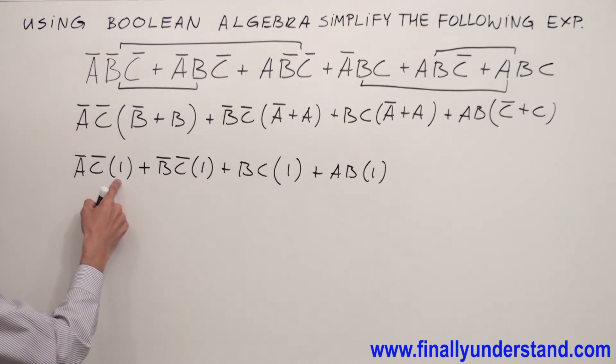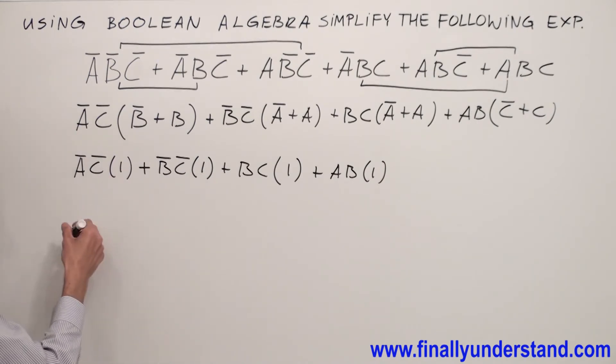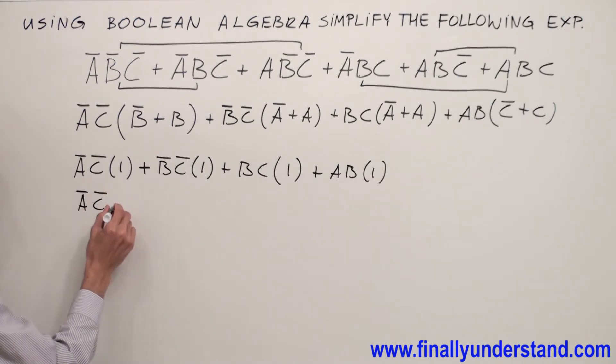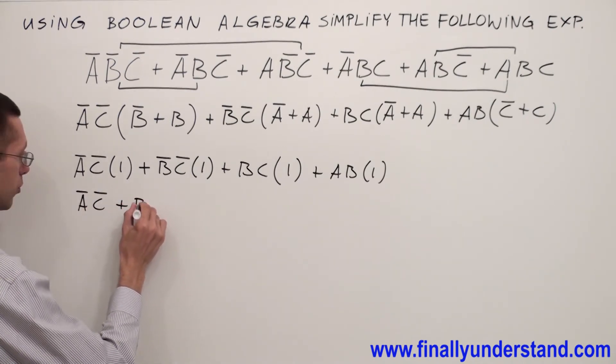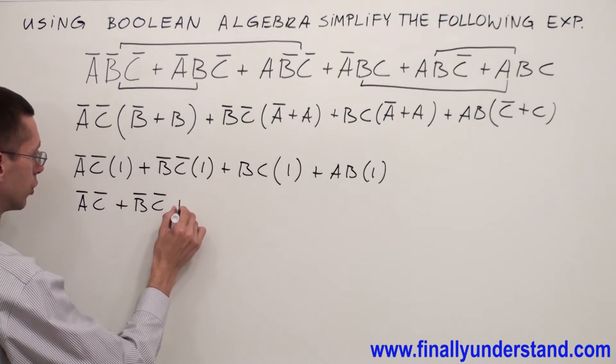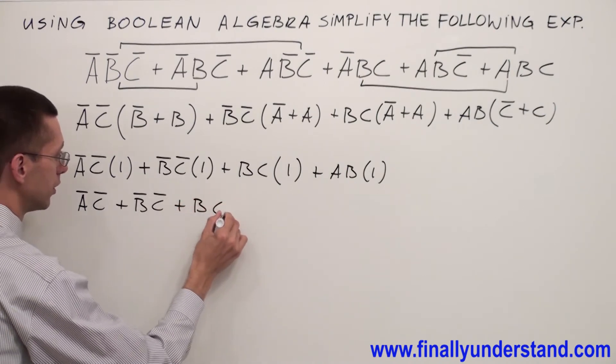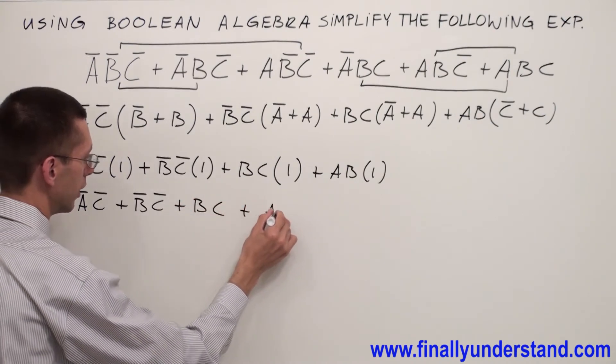Anything multiplied by 1 is the same thing. So simply I'm going to have A̅C̅ or B̅C̅ or BC or AB.